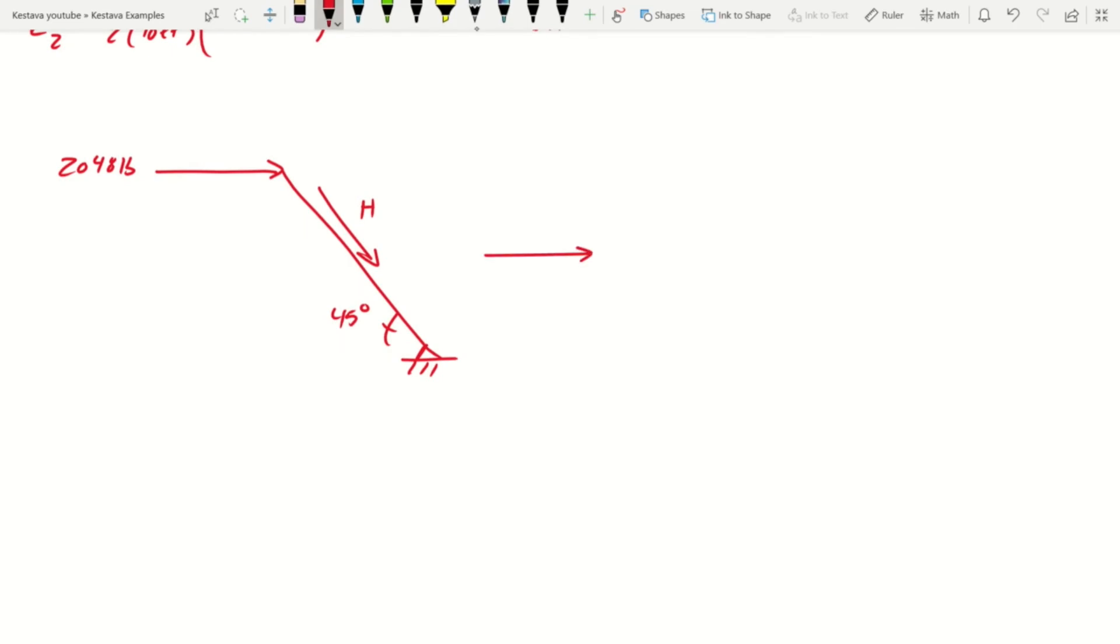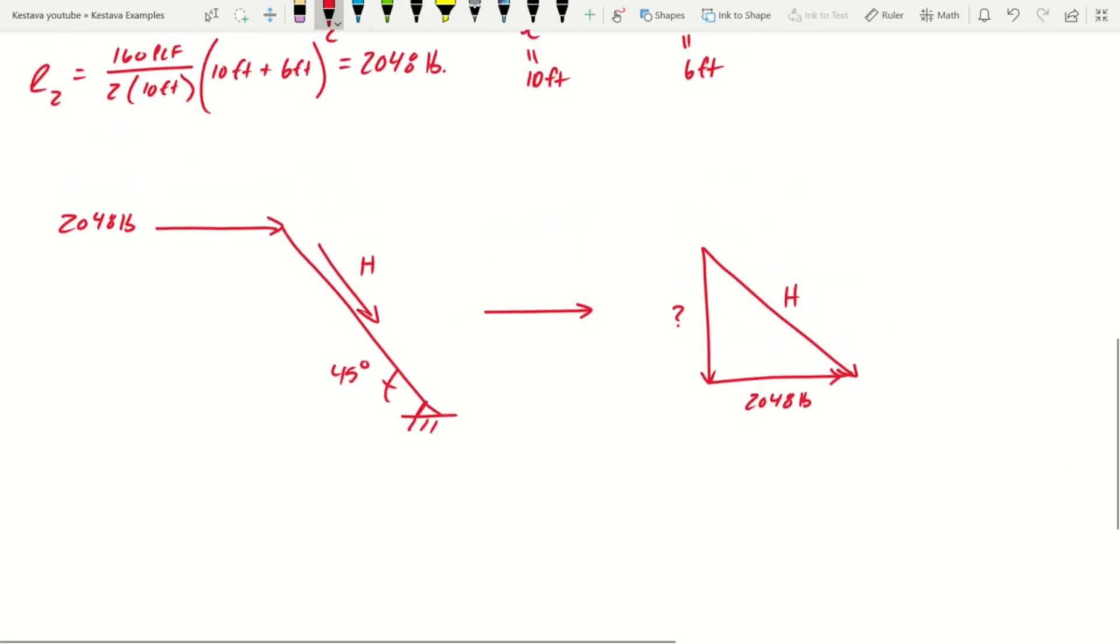And we'll call that, we'll denote it as H. And so what we can do here is just SOHCAHTOA. And that axial force is broken into both a vertical force and a horizontal force. Well, we know a horizontal force of 2,048 pounds. H is our axial force. Our vertical component is unknown, but we don't need to find the vertical component because we already are given our angle.